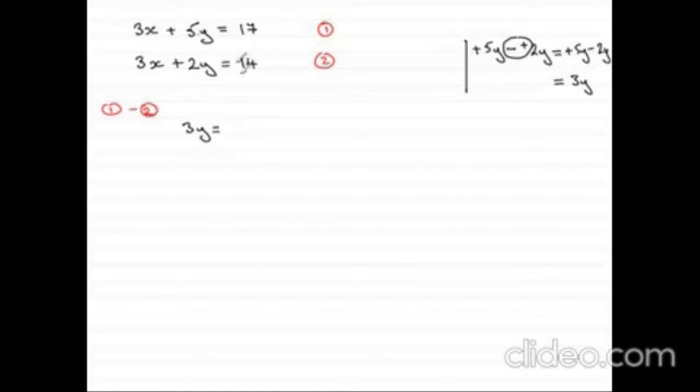Equals to 17 minus 14 is just 3. We have to divide both sides by 3. 3 divided by 3 is just y. And on the other side, 3 divided by 3 is 1. So y is equal to 1.